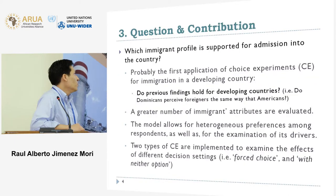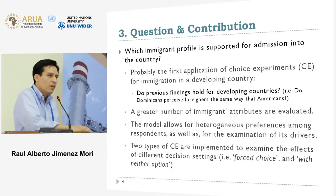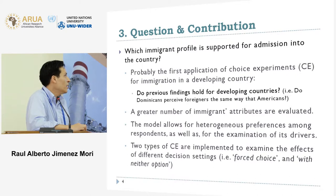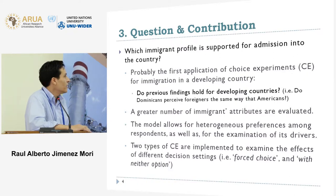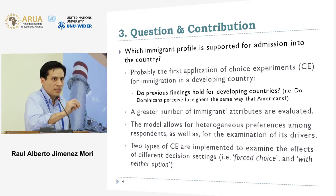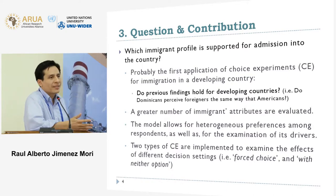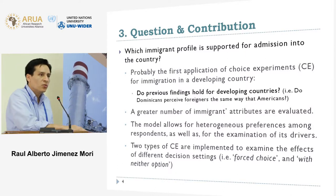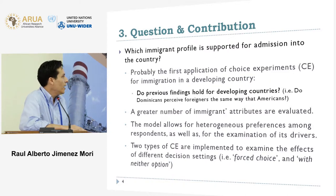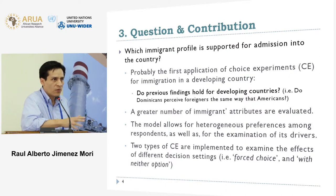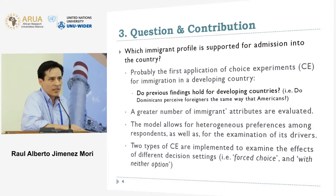The question I ask is: which immigrant profile — which type of immigrant — is supported for admission into the country? My contribution is that this is, to my knowledge, the first study using a stated preference approach applied to a developing country. Previous studies in this stream focus on developed countries — Norway, the United States — and we don't know if those findings hold for our context, which differs in terms of institutions, coverage of social services, labor market competition, and labor market composition.